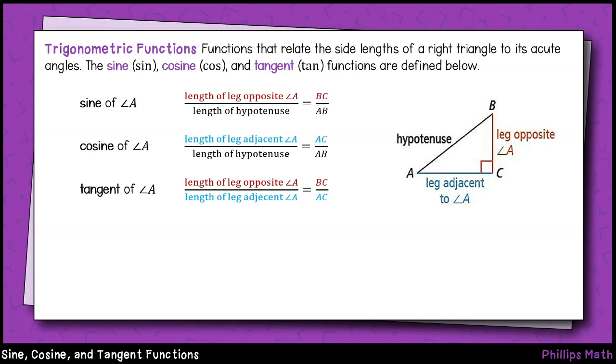These functions are going to allow you to solve for a missing side length, given that you know angle A or angle B for a right triangle.